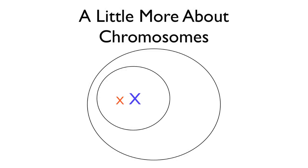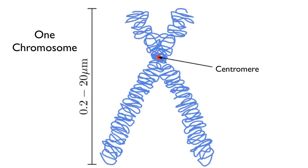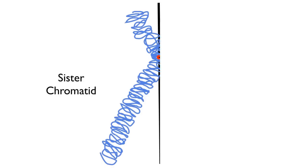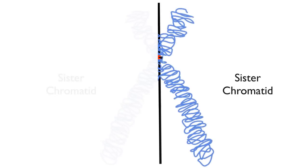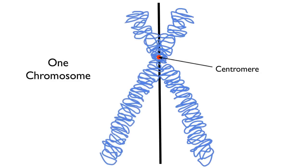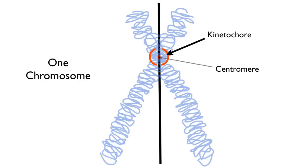A little more about chromosome structure will be very helpful. Chromosomes are always drawn like X's and they actually do look like this. It's an X, and there's a centromere at the center. Each half is a replicated sister of the other half — we call these sides chromatids. You have one sister chromatid on one side of the centromere, and on the other side, the other sister chromatid. You can think of them as identical twins joined at the center at the centromere.